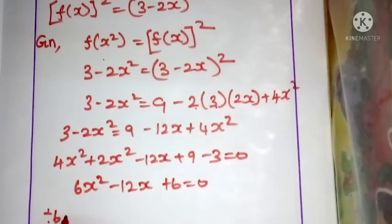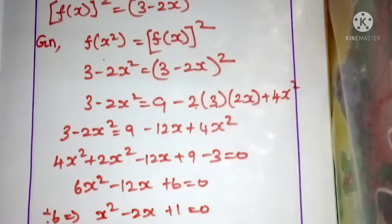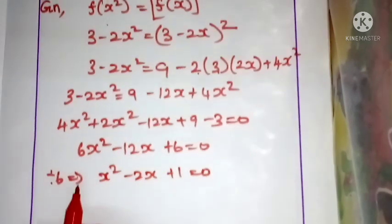Divide everything by 6. We get x² minus 2x plus 1 is equal to 0. Now apply factorization.